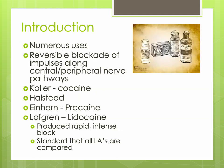Local anesthetics are used to provide analgesia and anesthesia for a multitude of things. They're used during surgery, during blocks, and to treat dysrhythmias — they're just widely used. Locals produce a reversible conduction blockade of impulses along central and peripheral nerve pathways. The higher the concentration, the more the blockade. Sometimes it's a motor block, sometimes a sensory block, sometimes a combination of both.